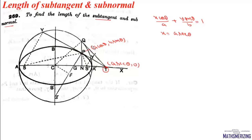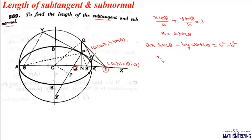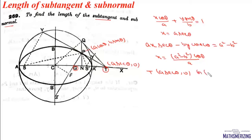At the same point P, the equation of the normal is ax secθ − by cosecθ = a² − b². To find the intersection with the x-axis (point G), we put y = 0 and get x = (a² − b²) cosθ / a. So the coordinate of G is ((a² − b²) cosθ / a, 0).